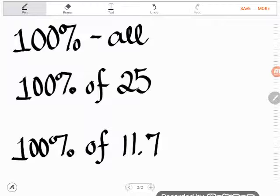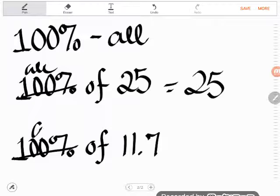So if I ask you what is 100% of 25, I'm asking you for all of 25. That's just of course 25. And if I ask you what is 100% of 11.7, I'm just asking you what's all of 11.7. It's 11.7.